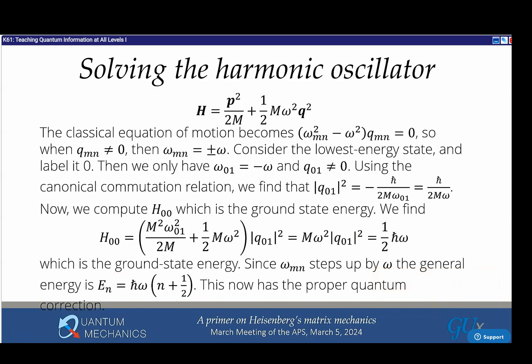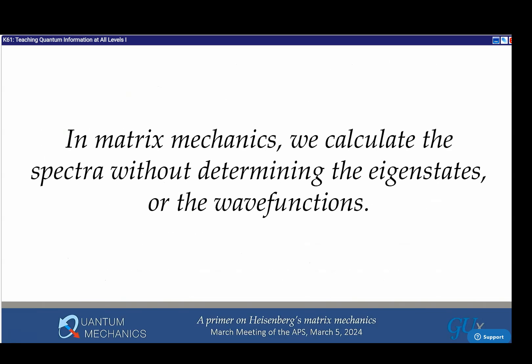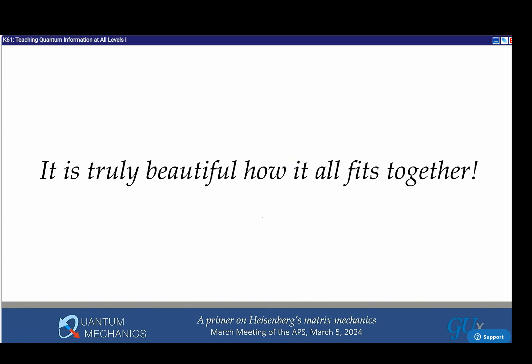That's how this works. It's pretty remarkable how the logic goes. In matrix mechanics you calculate spectra without determining the eigenstates or eigenfunctions. I personally think it's truly beautiful. You don't have to postulate the canonical commutation relation. Just say quantum mechanics must agree with classical mechanics and represent quantum objects by matrices because of spectroscopy, and from that you get [q,p] = i*h-bar.